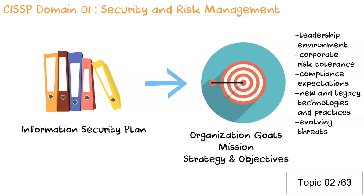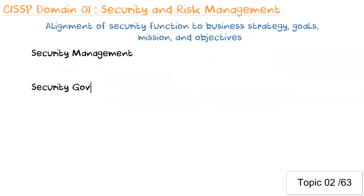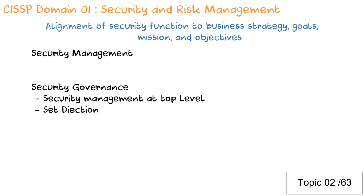Security management starts, or should start, at the top with executive management and board level. Security management at the top level is known as security governance. Security governance sets direction for management and also ensures the organization has policies and processes in place to ensure that executive management is following directions, is fully informed, and is in control of information security strategy, policy, and operations.